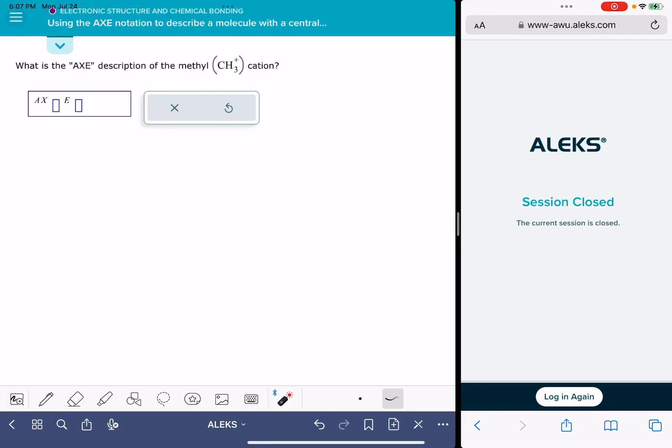In this video, I'll show you how to solve the ALEKS problem called using the AXE notation to describe a molecule with a central atom. This notation is used to describe a Lewis structure for a molecule. The X represents the number of bonds to the central atom in the Lewis structure, and the E represents the number of lone pairs on the central atom.